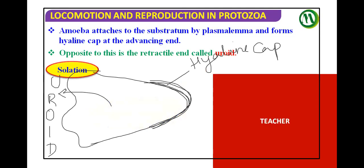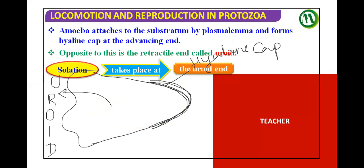Solation takes place at the uroid end. What is solation? The conversion of the gel into Sol — by adding water, we can convert the gel into Sol. So at the uroid end, solation takes place.